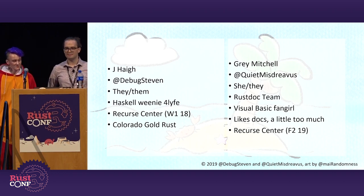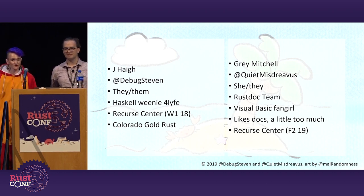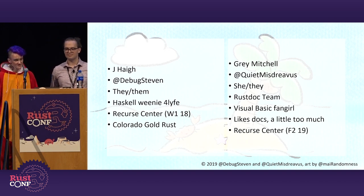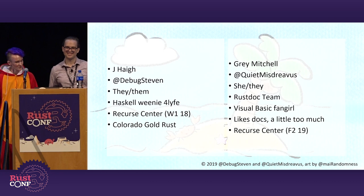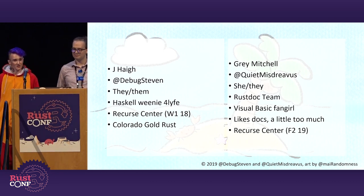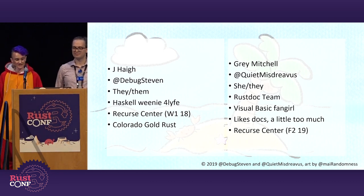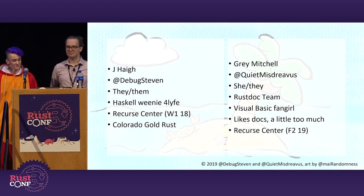My name is Jay Haig, and I'm debugsteven on Twitter. I'm currently a Haskell developer at SimSpace. I'm organizing Colorado Gold Rust this year — it's on September 20th and 21st if you're interested in attending. I've contributed to a handful of Rust projects, including Rust-Doc inside of Rust-C. I did my first contribution to Rust-C at the Recurse Center last winter. The Recurse Center is a self-directed, community-driven coding retreat in New York City.